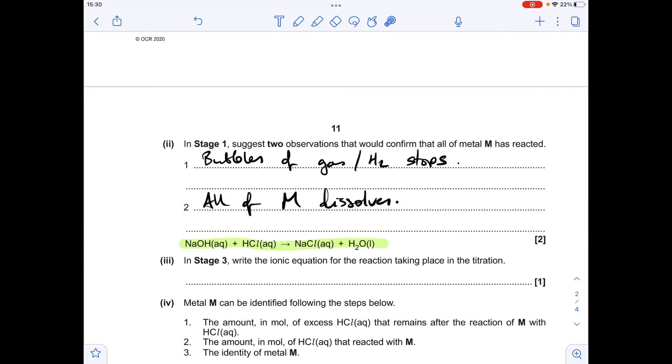Another equation to write, but this time an ionic equation. So in stage 3, we've got to write the ionic equation for the reaction taking place in the titration. I've just copied that from the information above, so that's the actual reaction taking place in the titration. It's the straightforward ionic equation for neutralization, so the aqueous hydroxide ion is reacting with the aqueous H+ ion, and making liquid H2O.